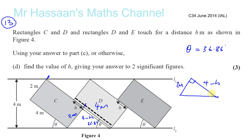So we can use trigonometry. We can say that this is opposite, this is adjacent. So the tangent of 36.86 degrees is equal to the opposite, which is 2, over the adjacent, which is 4 minus H.